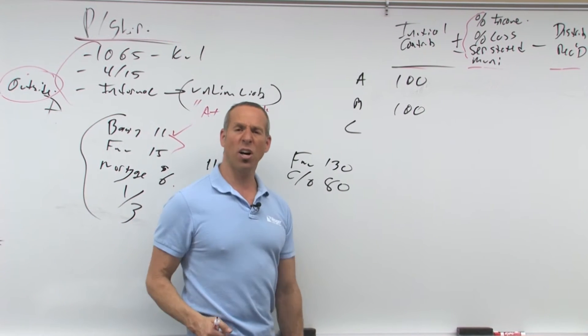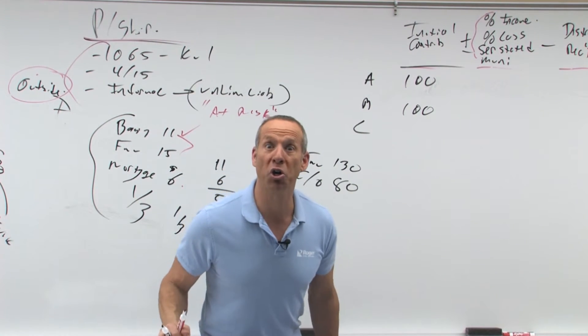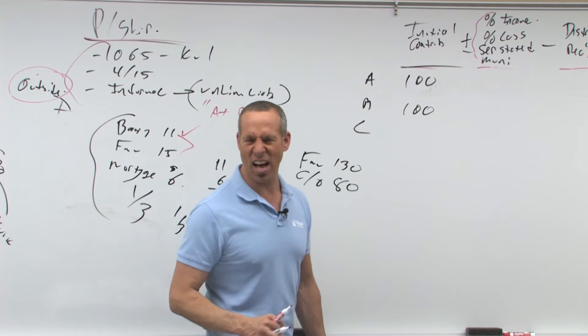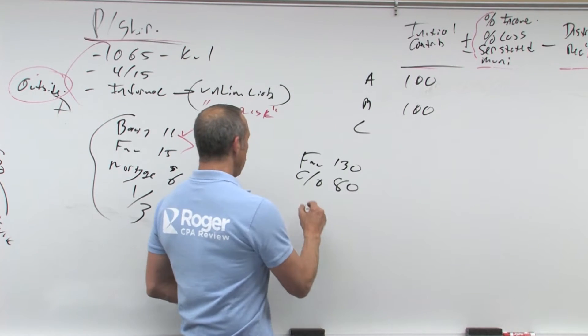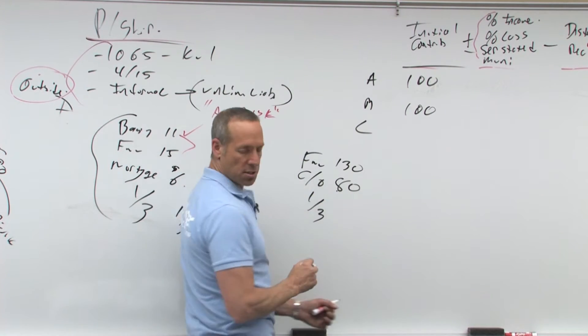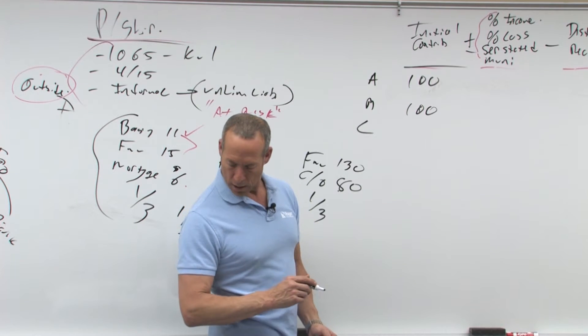Now remember, fair market value 130, carryover basis or adjusted basis or tax basis of 80. Now, why do they give you the fair market value number? To ruin your career. So you pick it, forget about it. We're each one third partners and this is subject to a mortgage.